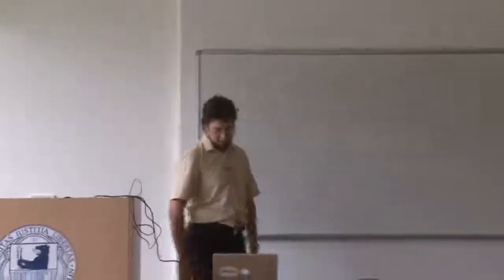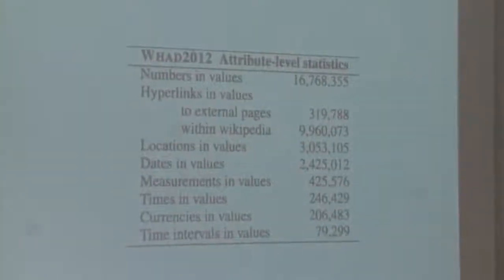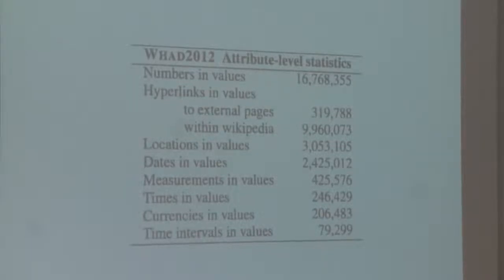We saw that really for every French commune there was a Wikipedia page containing an Infobox — probably someone starting from structured data with a full list of French communes automated the creation of all these pages. Most of them were stubs, but over time people have kept improving them. At the attribute level, 16 million attributes have numbers in values, there are 300,000 hyperlinks to external pages and almost 10 million hyperlinks to other Wikipedia pages in the values, plus a significant number of locations and dates.